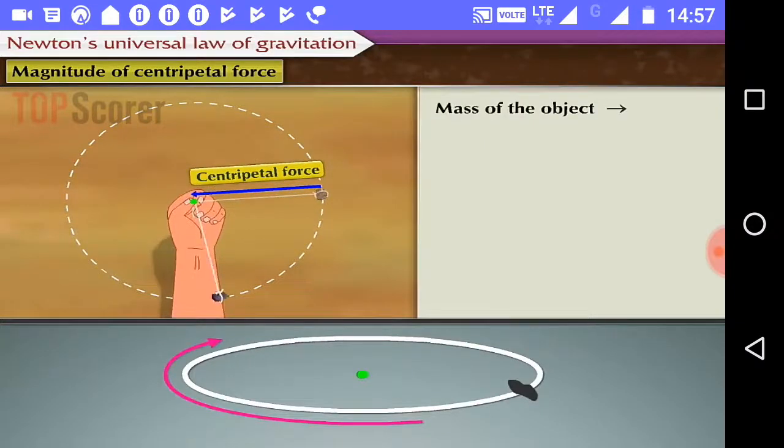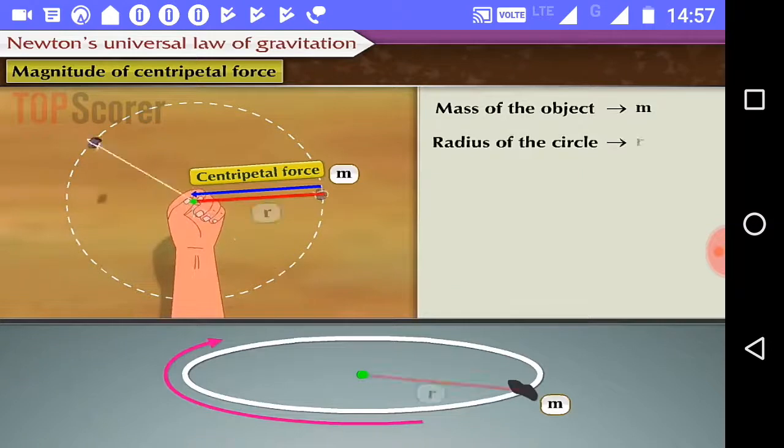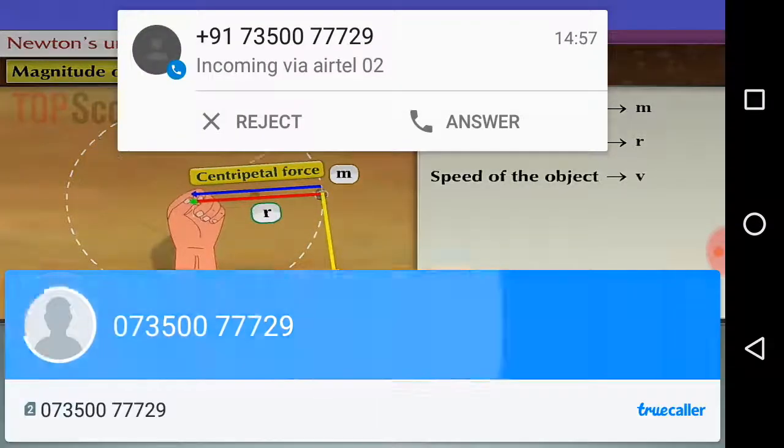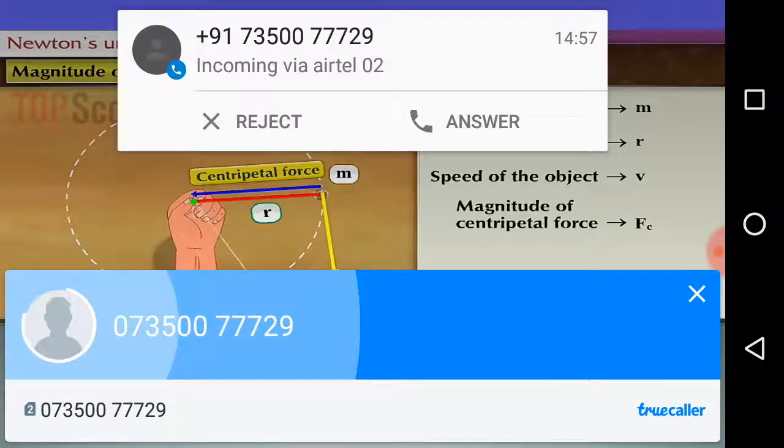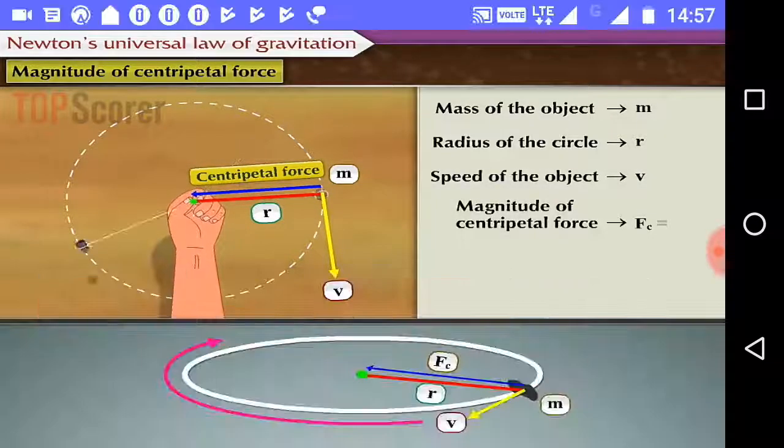If the mass of the object is denoted by M, radius of the circle is denoted by R, and its speed is denoted by V, then it can be shown that the magnitude of centripetal force is given by